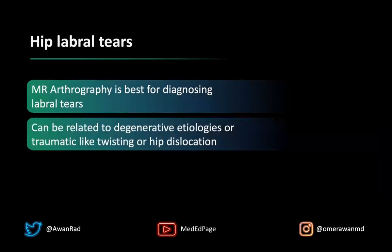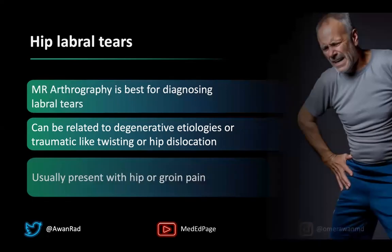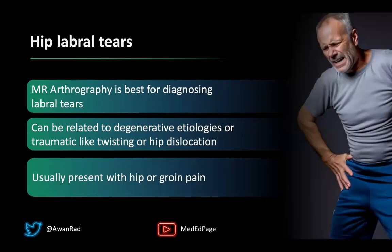There are many different causes for labral tears, most of which occur from degenerative changes from osteoarthritis or acute trauma, like in a hip dislocation or a twisting injury. These typically present with pain. Many people with labral tears complain of constant hip pain, clicking, pain with motion, and abduction — all ways that hip labral tears can manifest in clinical practice.